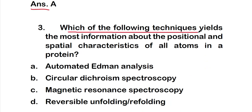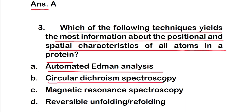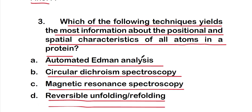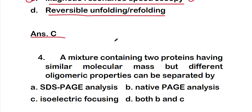Question 3: Which of the following techniques yields the most information about the positional and spatial characteristics of all atoms in a protein? Options: A) Automated Edman analysis; B) Circular dichroism spectroscopy; C) Magnetic resonance spectroscopy; D) Reversible unfolding or refolding. The right answer is option C — magnetic resonance spectroscopy yields the most information about the positional and spatial characteristics of all atoms in a protein.